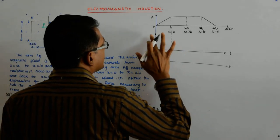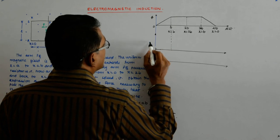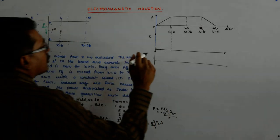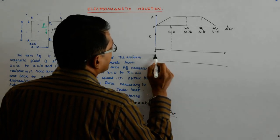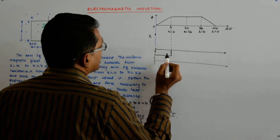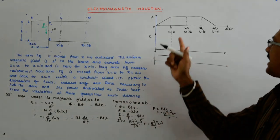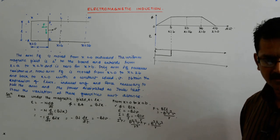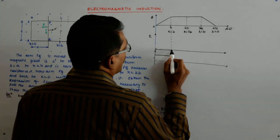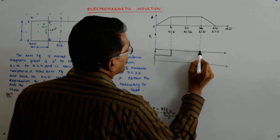Now I come back to plotting induced EMF versus distance. From 0 to B, induced EMF is a constant value (-BLV). Beyond that, since there is no change in flux, dΦ/dt = 0. So the EMF immediately drops to 0 and continues at 0.